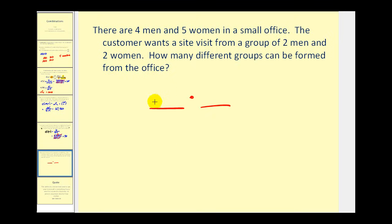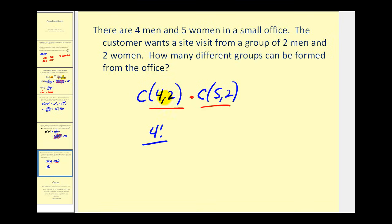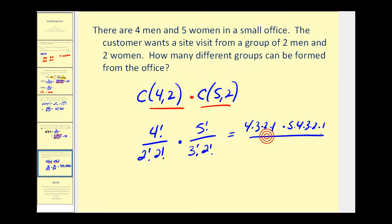First we consider the number of ways to choose the men: there are four men and we're choosing two at a time, so that would be four choose two. Then for the women, there are five to choose from, so this would be times five choose two. Writing this out: we have four factorial over (4 minus 2) factorial — that's two factorial — times another two factorial for R, times five factorial over (5 minus 2) factorial — that's three factorial — times two factorial.